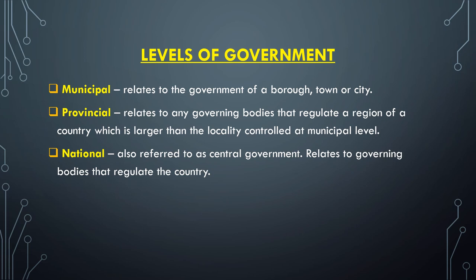The municipal level relates to the government of a borough, town, or city — this is where most service delivery happens and where government is brought closest to the people. The provincial level relates to governing bodies that regulate a region larger than the locality controlled at municipal level. In South Africa, we have nine provinces, and each province has its own judiciary, executive, and legislature. In the United States, these are called states rather than provinces.